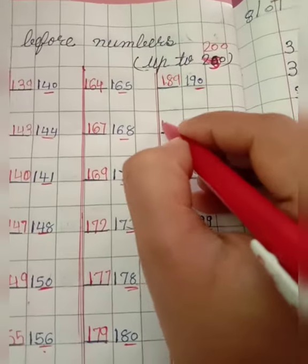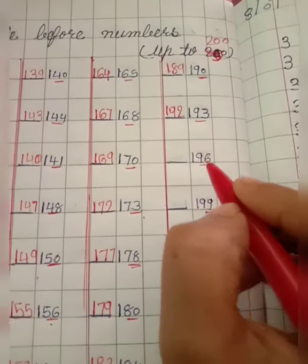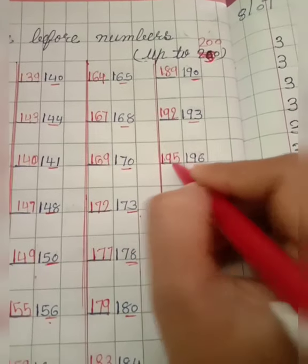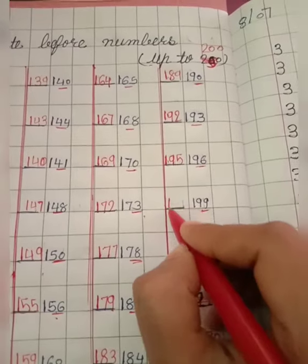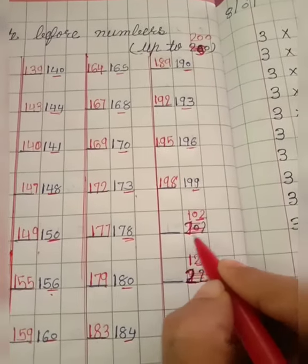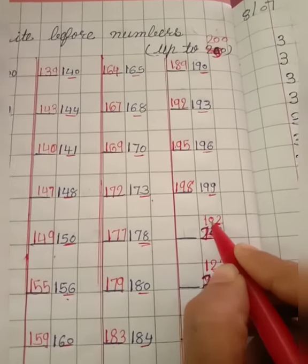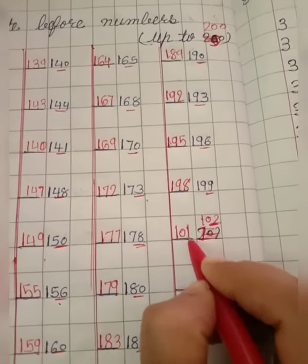93 before 92, so we will write 192. 96 before 95, so we will write 195. 99 before 98, so we will write 198. 102, so 02. So 0 se pehle to koi number nahi hota, but 2 se pehle 1 aata hai. So we will write 101.